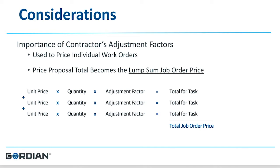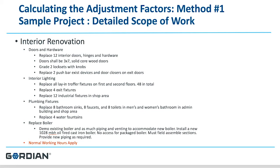Job order contracting is a performance-based contract. So long as you do good work, do it on time, and submit accurate price proposals, the owner has the incentive to give you another job and another job and another job. You earn your way to additional work through great performance, and you have to take that into account as you calculate your factor.